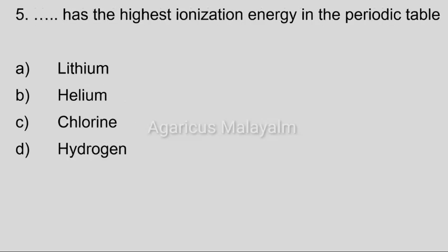Fifth question. Dash has the highest ionization energy in the periodic table. Option A, Lithium; Option B, Helium; Option C, Chlorine; Option D, Hydrogen. Correct answer: Option B, Helium.